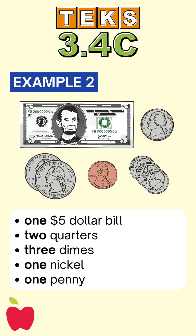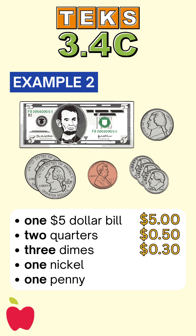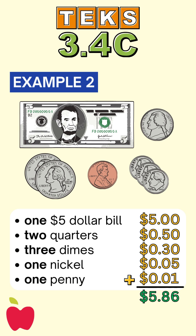A $5 bill is worth $5. Two quarters are worth $0.50. Three dimes are worth $0.30. One nickel is worth $0.05. And one penny is worth $0.01. Now, add it all up: $5 plus $0.50 plus $0.30 plus $0.05 plus $0.01 equals $5.86.